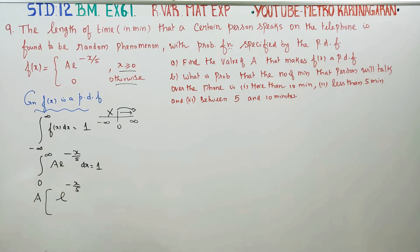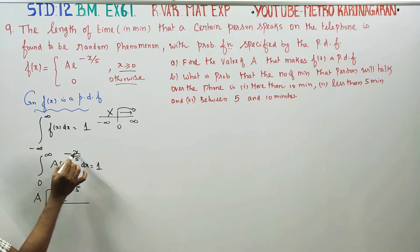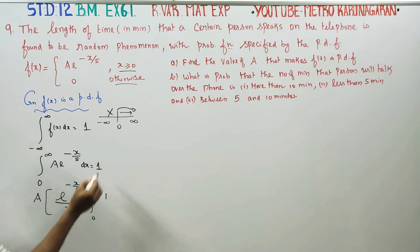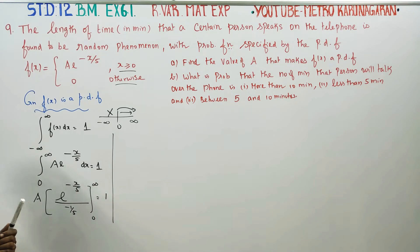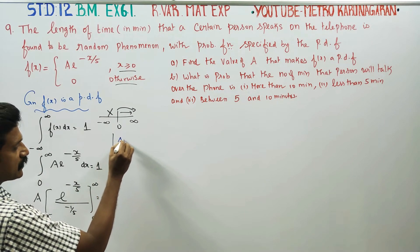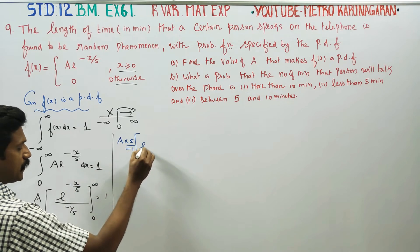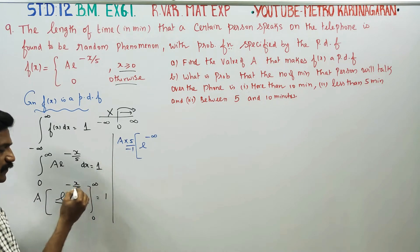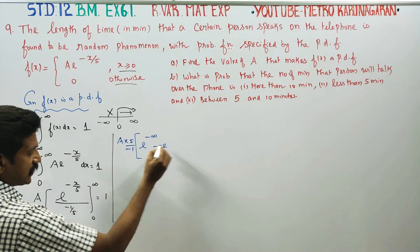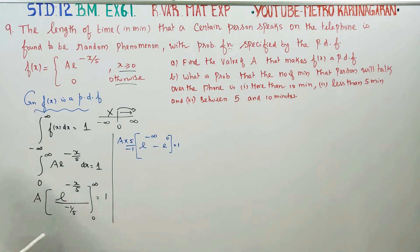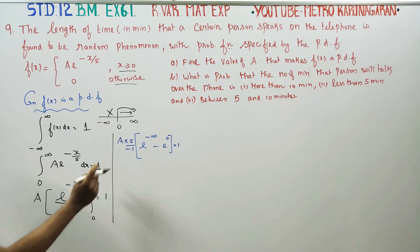We integrate e to the power of the expression. The denominator's coefficient of x is minus 1 by 5. Evaluating from 0 to infinity gives us 1. We substitute the upper limit minus the lower limit: e to the power of minus infinity over 5, minus e to the power of 0, equals 1. The coefficient of x, which is minus 1 by 5, becomes its reciprocal.